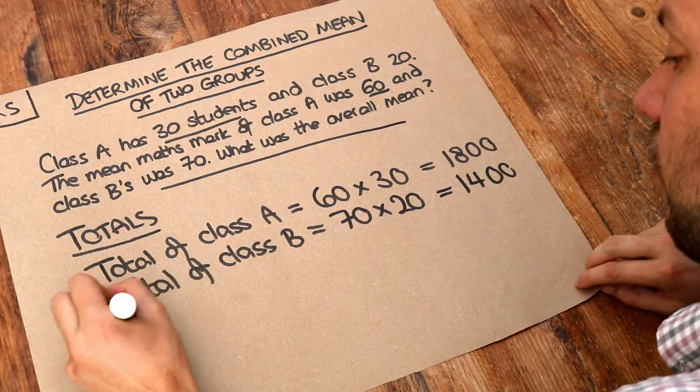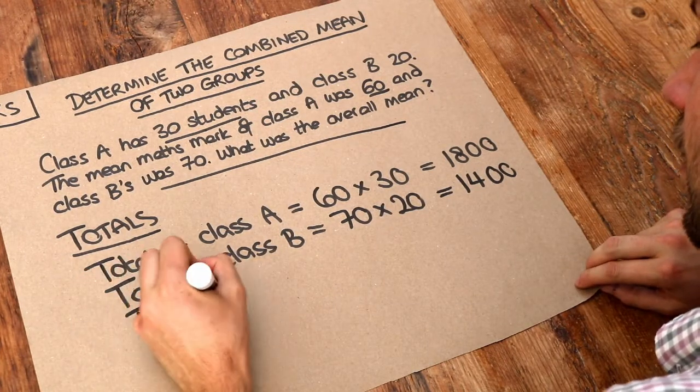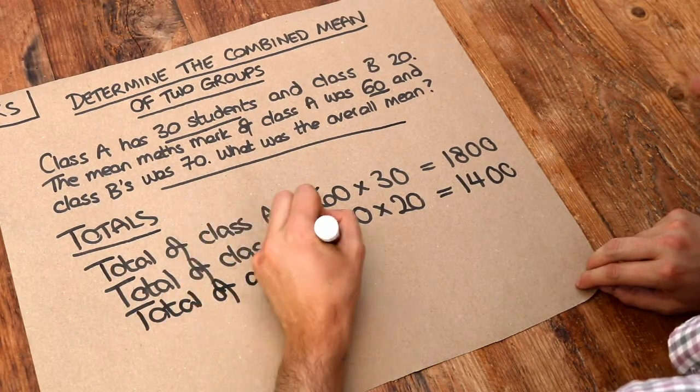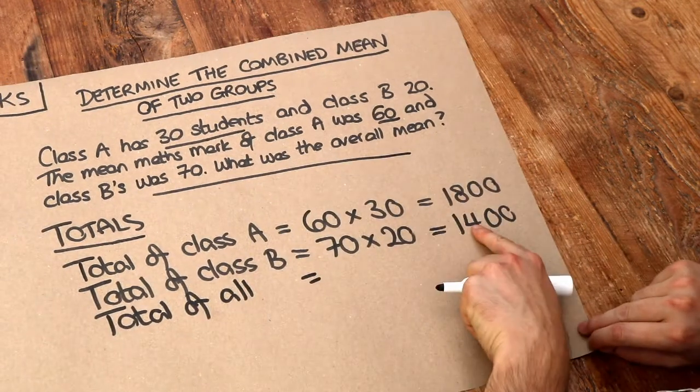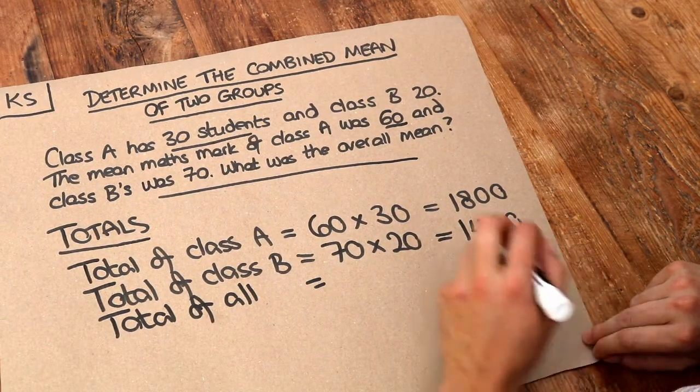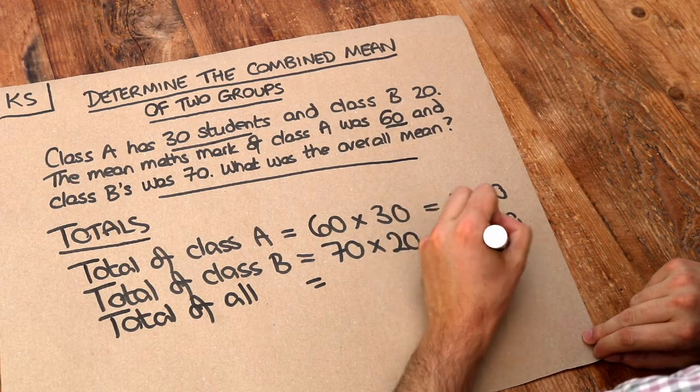So therefore the total of everyone of both classes is just going to be 1,800 plus 1,400 and that's going to be 3,200.